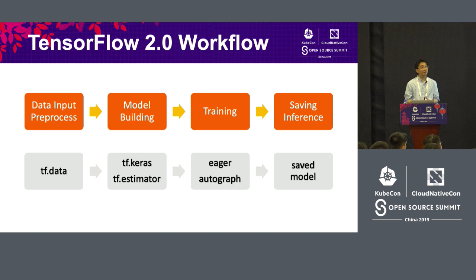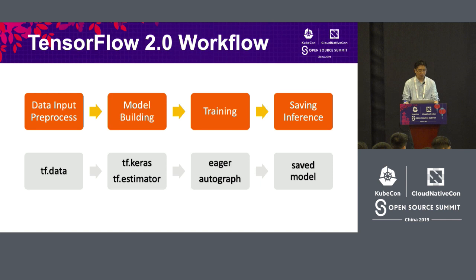For training, you now have eager execution. You can also use TF function to pre-define a small graph so that execution can be sped up. For training and inference, you can use the SavedModel format to save and reload your model. That's the TensorFlow 2.0 workflow.